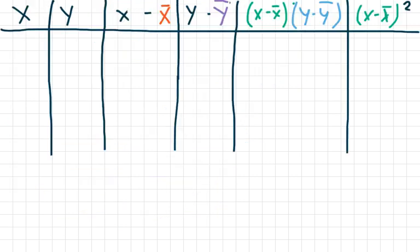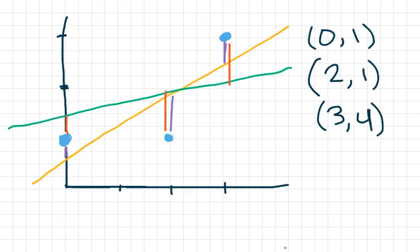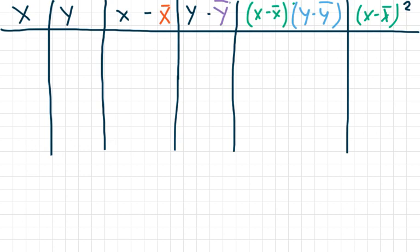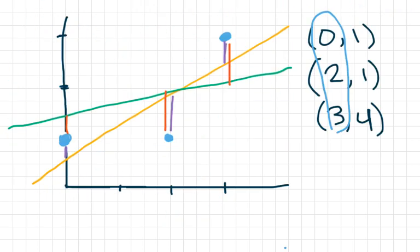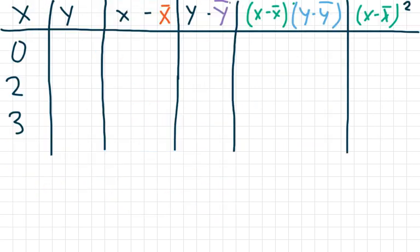Let's break this down into steps. I've made a table here to keep track of all the parts of that equation. First we just want the x and y values. The x values are zero, two, and three. The y values are one, one, and four — paired with their corresponding x values.